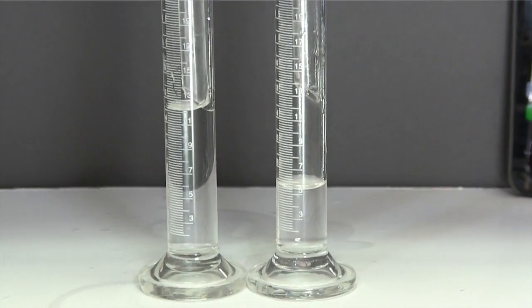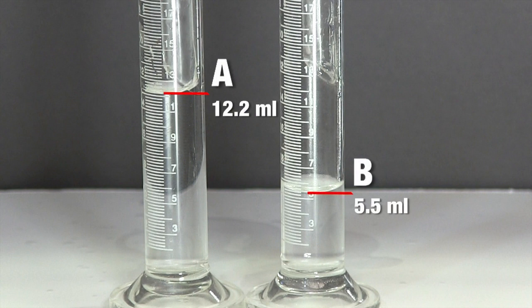In the dynamic flow test, drinker A actually discharged about 120 percent more water than drinker B.